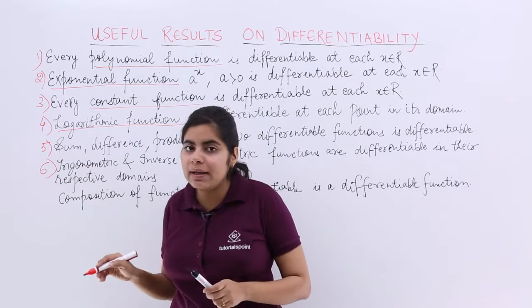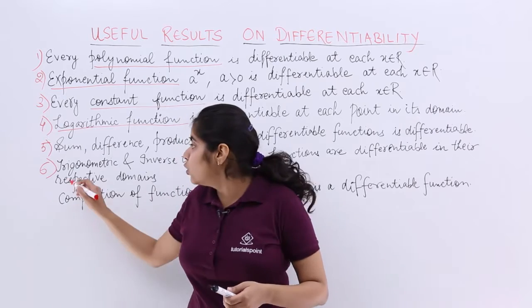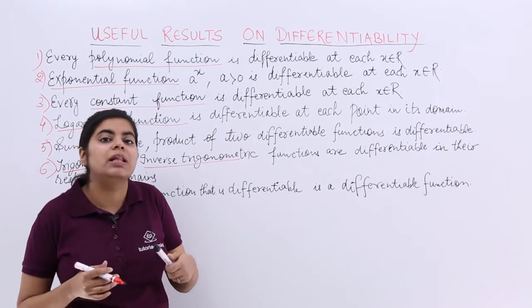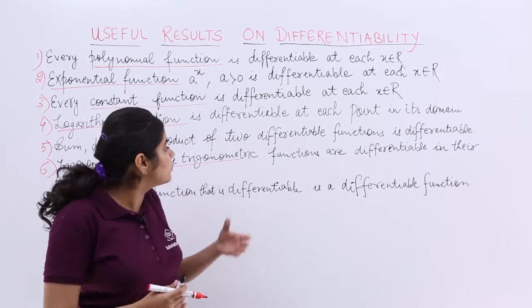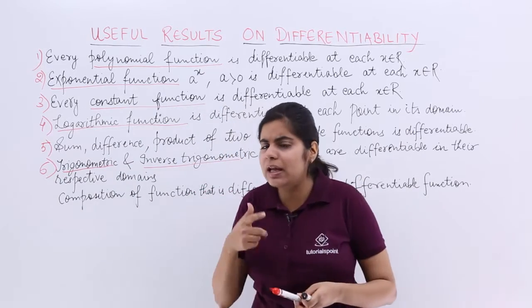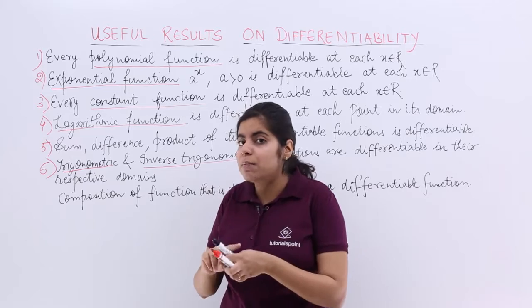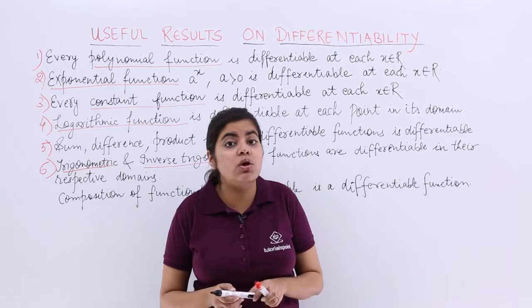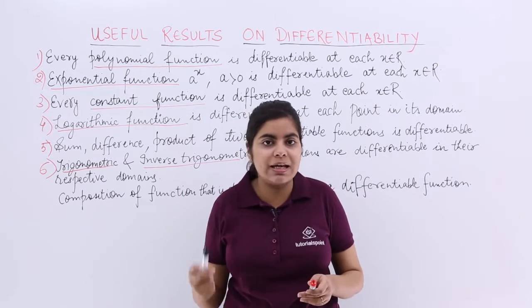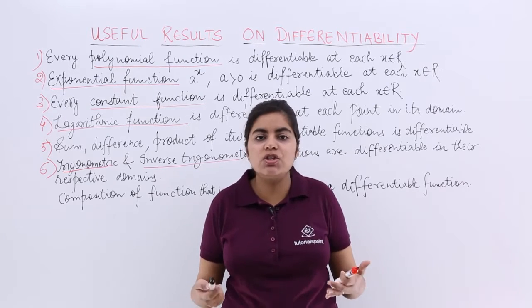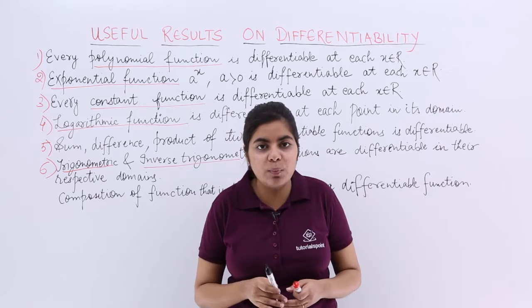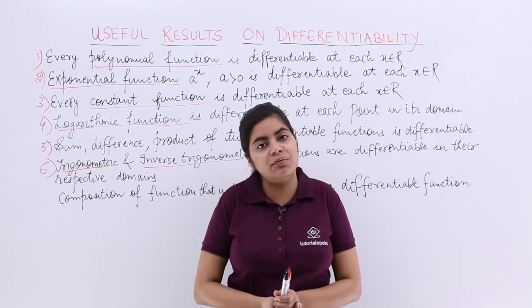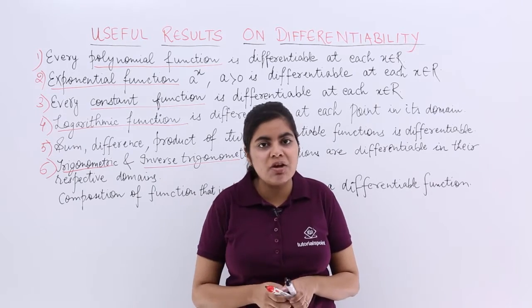The next point is regarding trigonometric and inverse trigonometric functions — like sine x, cos x, sine inverse x, cosecant inverse x, and so on. These functions are also differentiable, but only in their respective domains. For example, cosecant x equals 1 over sine x, and cosecant of 0 is not defined, so 0 is not in the domain of cosecant. Therefore, trigonometric and inverse trigonometric functions are differentiable only within their respective domains.